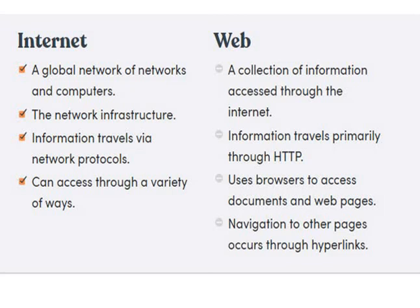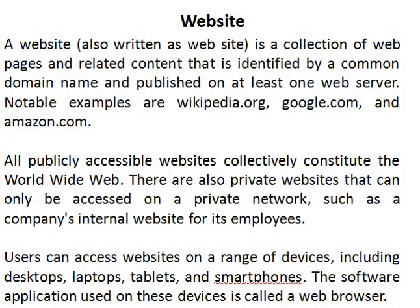A website is a collection of web pages and related content that is identified by a common domain name — like gehu.ac.in, which is a domain name — and published on at least one web server. For a website, two things are necessary: the domain name and the hosting. The domain name is like 'gehu' — that is the name — and dot ac dot in is the extension, called the domain extension. Dot com, dot net, dot in, dot org, dot edu are all domain extensions.